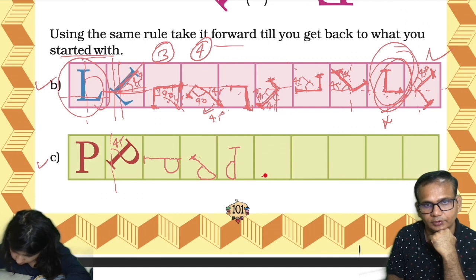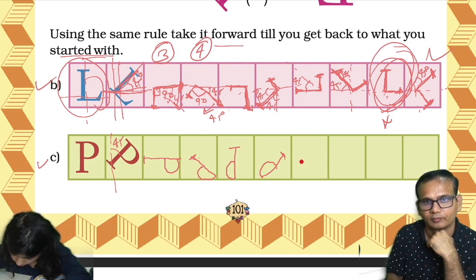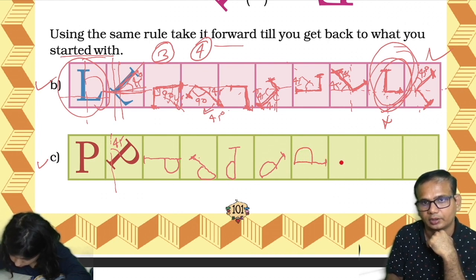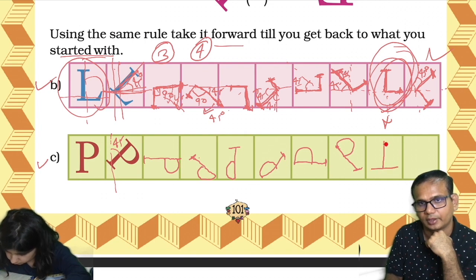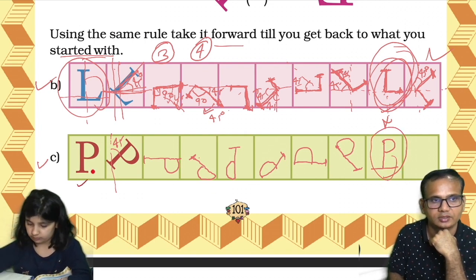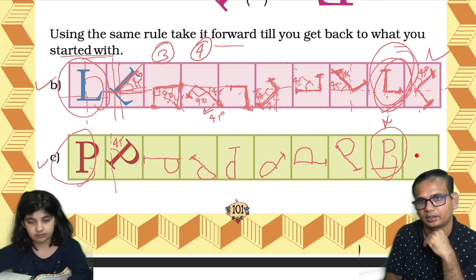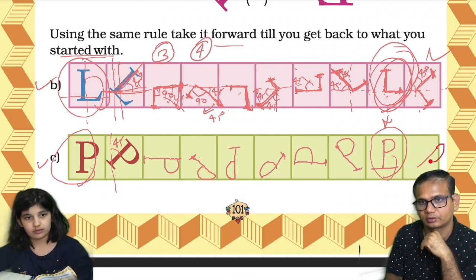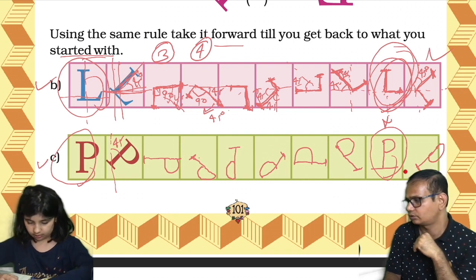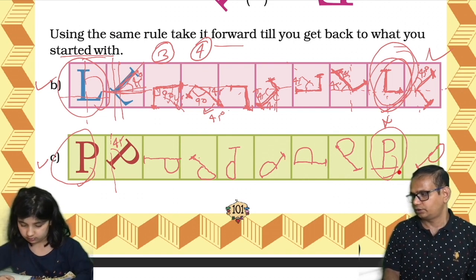Then again 45 degrees here, then again 45 degrees, and then again 45 degrees. I got the same thing I started with! But I can turn it because I have one more box, so I'll turn it. Let me check mine too — yeah, you also got the same thing I think.